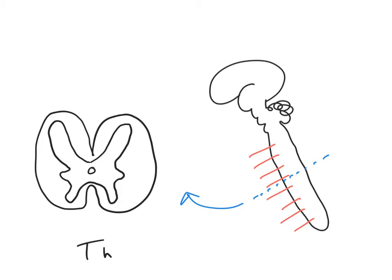Outside of the grey matter is the white matter. Grey matter is composed of cell bodies with synapses. White matter is composed of axons.